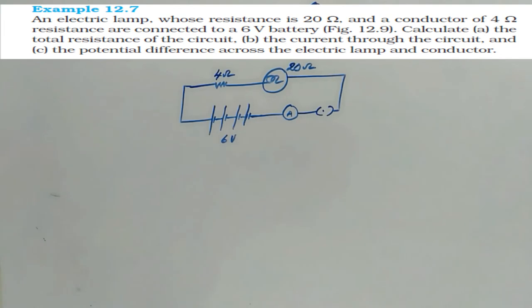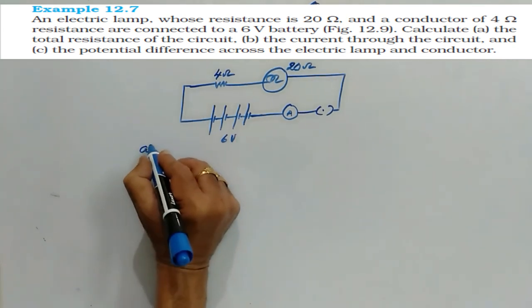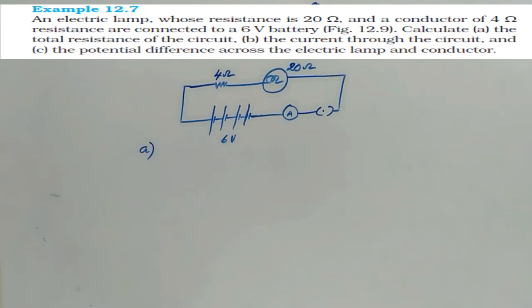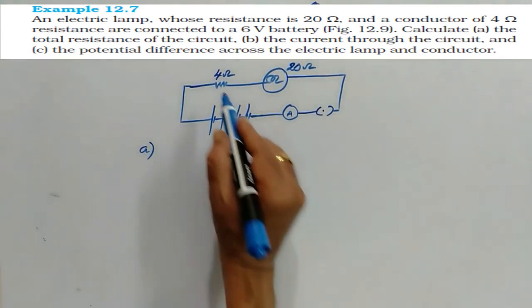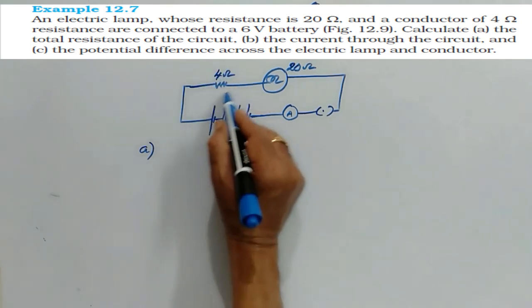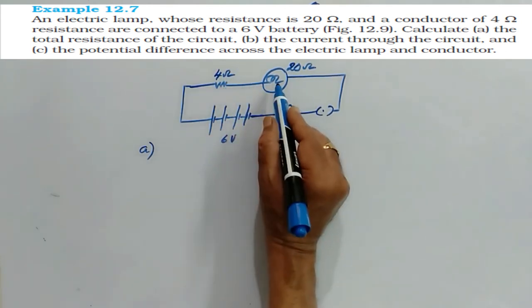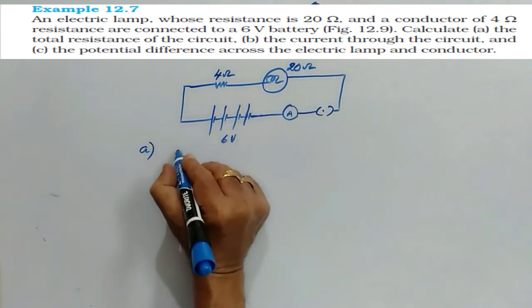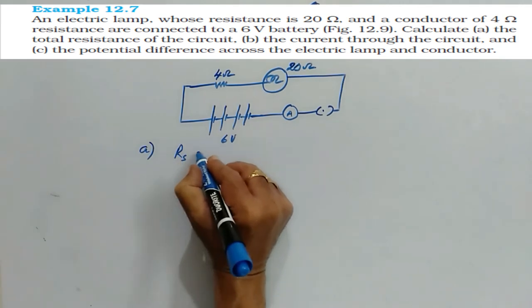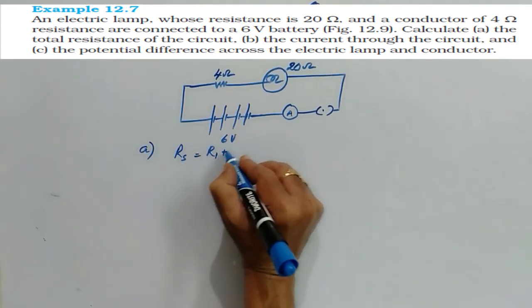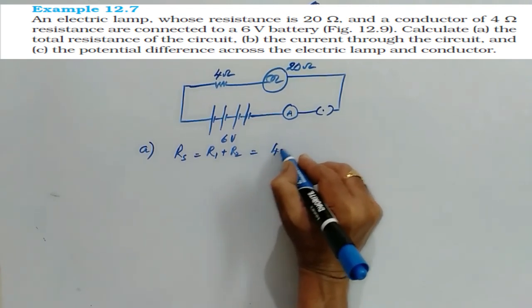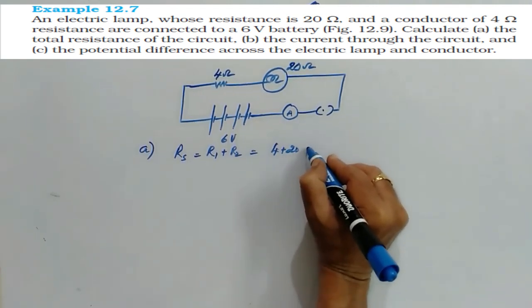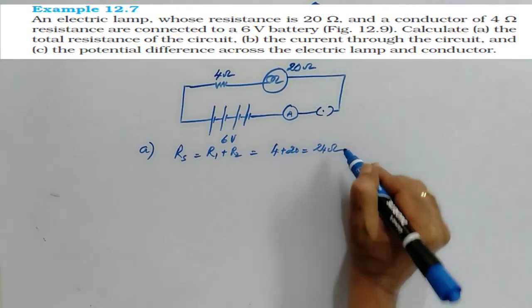This is the given circuit diagram. Here there are three parts of the question. One, calculate the total resistance of the circuit. What is the total resistance? Because this 4 ohm resistance is in connection with the series. The 4 ohm resistor is connected in series with the bulb. Therefore in series we know that the net resistance is always R1 plus R2, that is 4 plus 20, which gives 24 ohm.